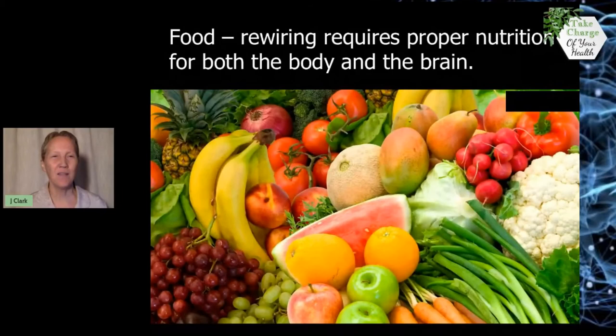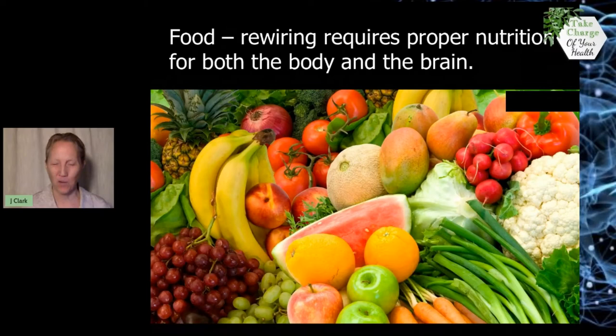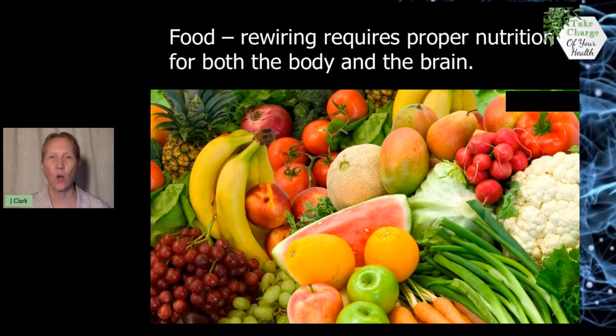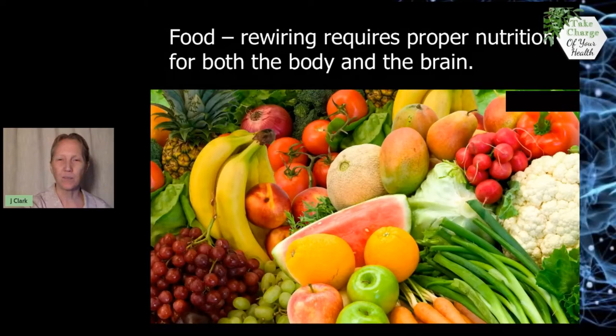The fourth principle is food. Can you believe that? Rewiring requires good nutrition for both the body and the brain. And it's well-studied and well-known that foods affect our brains. And some make them slow, and others overstimulate it. And some foods are tremendously helpful. Diet definitely affects the brain more than most people realize.